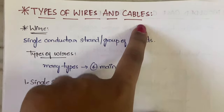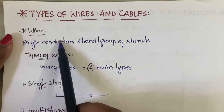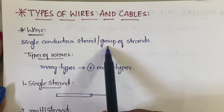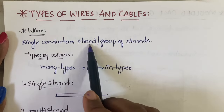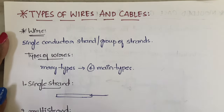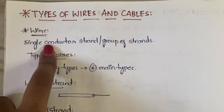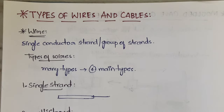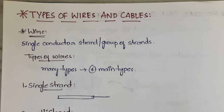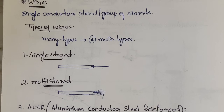First let us see what is a wire and what are the types of wires, then cables and the different types of cables. A simple wire is nothing but a single conductor strand or group of strands — you will have only one conductor. In case of cables, you will have more than one conductor. We are mainly going to discuss four types of wires in this video.